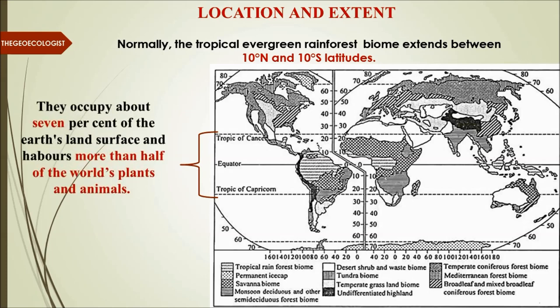They occupy about 7 percent of the earth's land surface and harbor more than half of the world's flora and fauna. In just 7 percent of land area, it harbors more than 50 percent of the world's plants and animals — that is the richness.